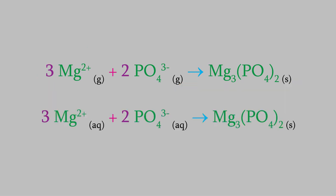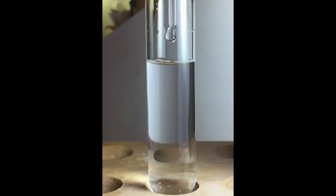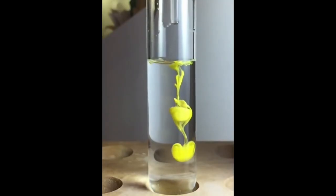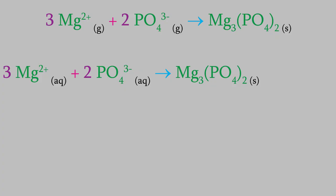For example, here is the reaction in which aqueous ions combine to form the solid crystal we seek. This reaction is very similar to the one that corresponds to the lattice energy — the only difference is that the reactants are aqueous ions instead of gas phase ions. Unlike the lattice energy reaction, this reaction is very easy to perform in a simple laboratory experiment. In fact, you've probably done similar reactions in your chemistry courses as early as general chemistry. It's just a simple precipitation reaction, and its enthalpy is easy to measure — in the case of this reaction, it's 195 kilojoules per mole.